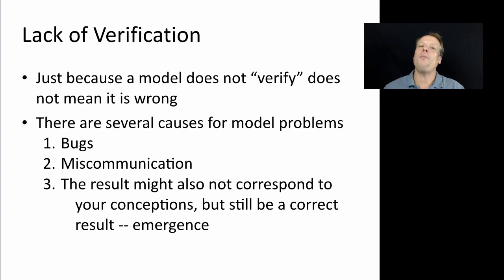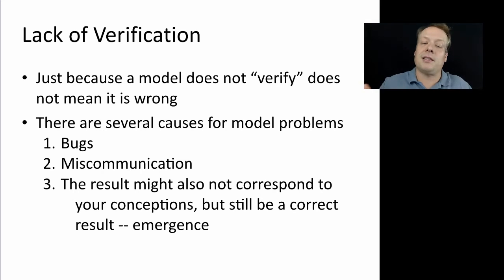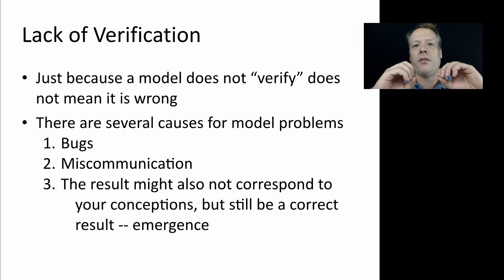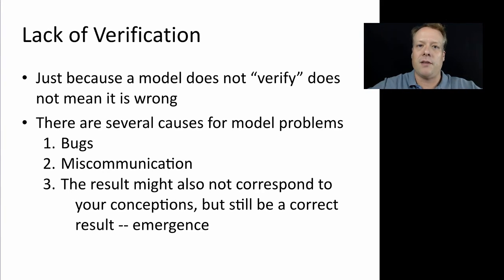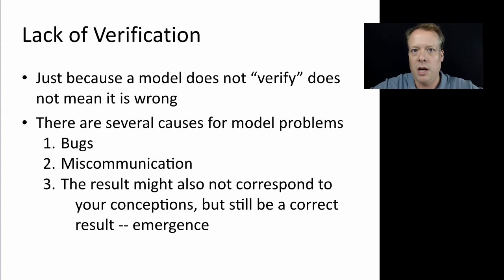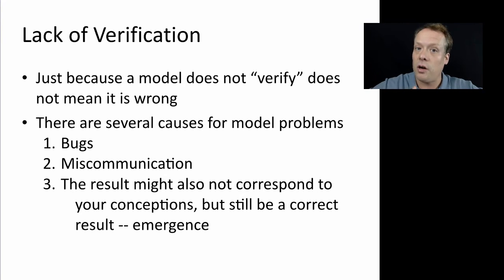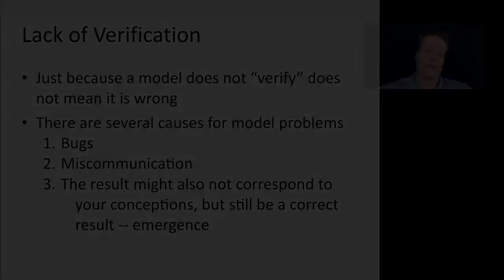Finally, it could be that your model doesn't verify for a very simple reason: agent-based models are complex systems. As a result, the results are an emergent property from the low-level agent interactions, and there might be something you weren't able to predict about the way those interactions occur. As a result, the model features emergent behavior that's still correct, just not what you thought it would be.